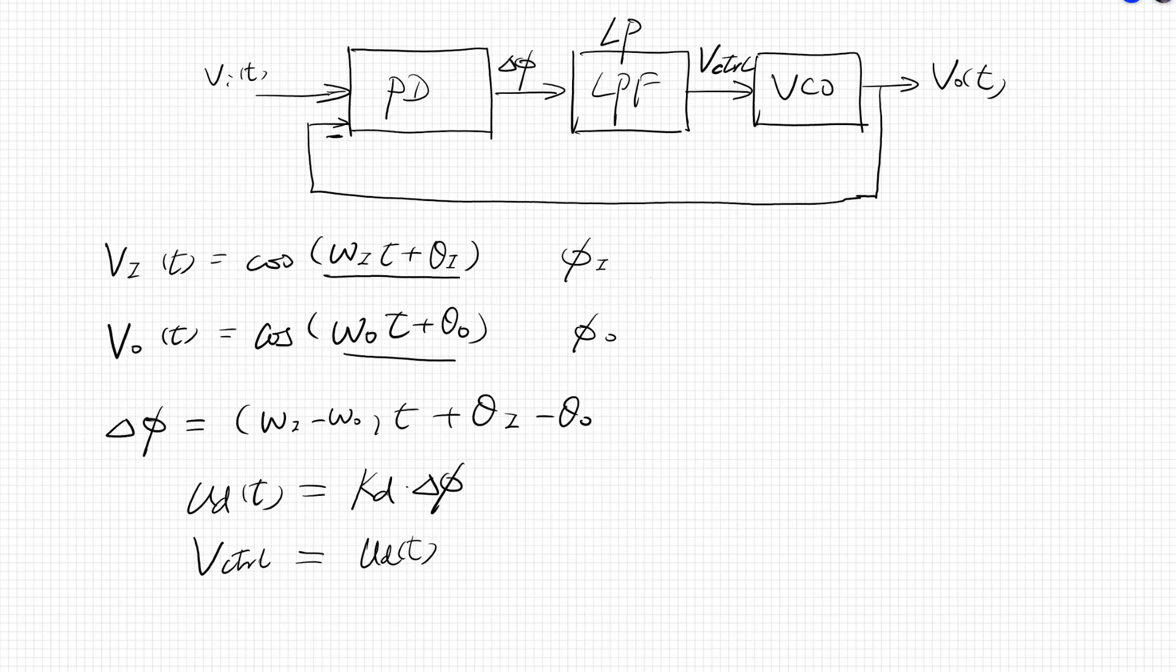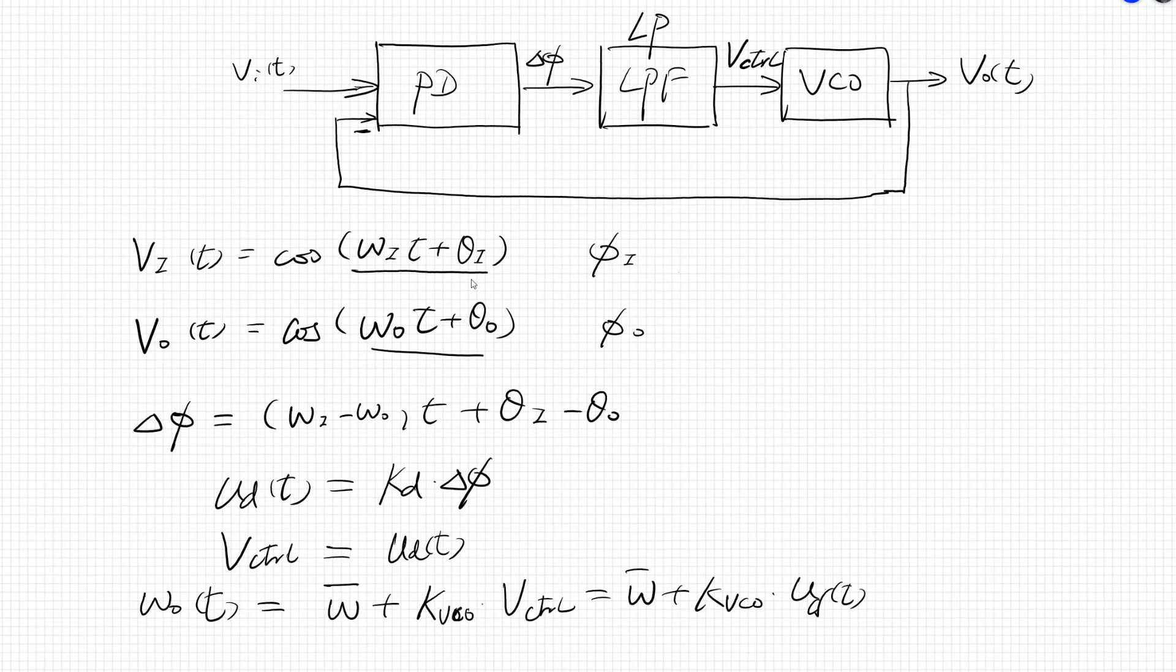Now the VCO will tune the output signal with a frequency, that is my radian frequency omega O. We have the given initial frequency, which is the center frequency of the VCO, plus K VCO times V control. So it's linearly proportional to the control voltage, which is also linearly proportional to U D T, the output of my detector, reflecting the difference of phases. Here is U D T, and that's a loop filter.